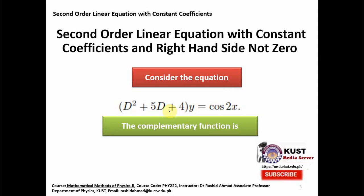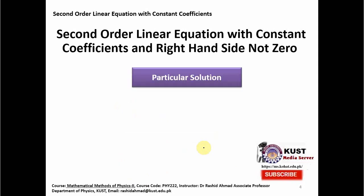In order to solve this, we will factorize the left hand side and then try to find the solution. Before that, let us bring in something called the complementary function. The complementary function is actually the solution of the equation when the right hand side is equal to zero, which we can find by some method. The most general complementary solution is A·e^(-x) + B·e^(-4x). We call this the complementary solution.